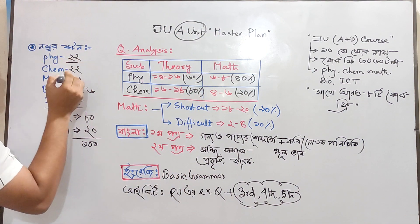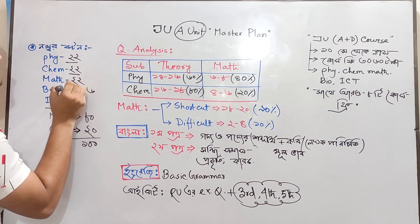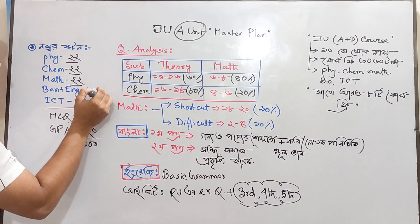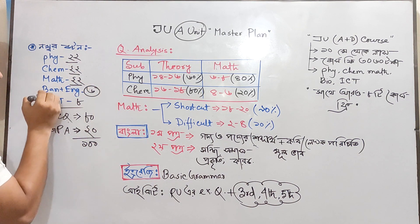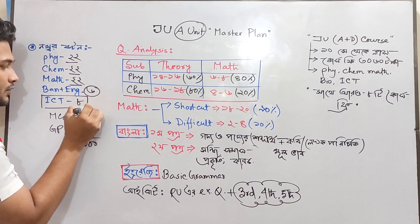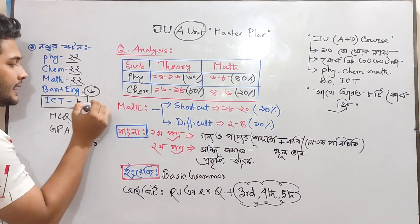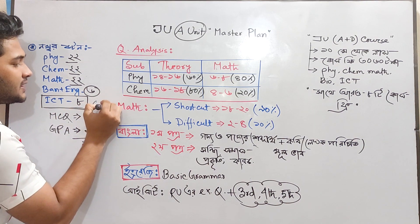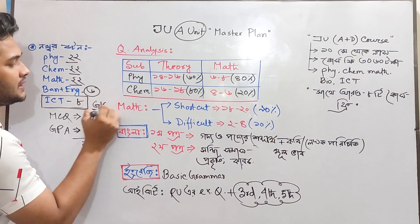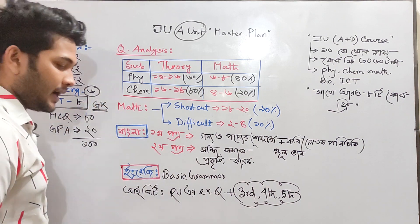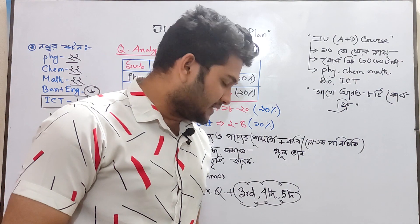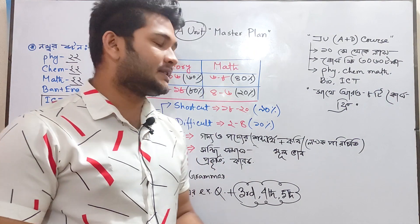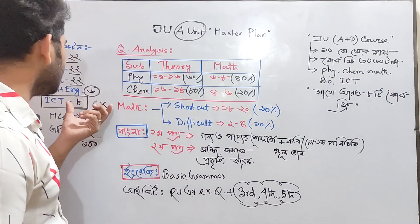Physics is 2, chemistry is 2, math is 2, Bangla and English is 8. They look like they have 8 numbers and that makes a difference for us.